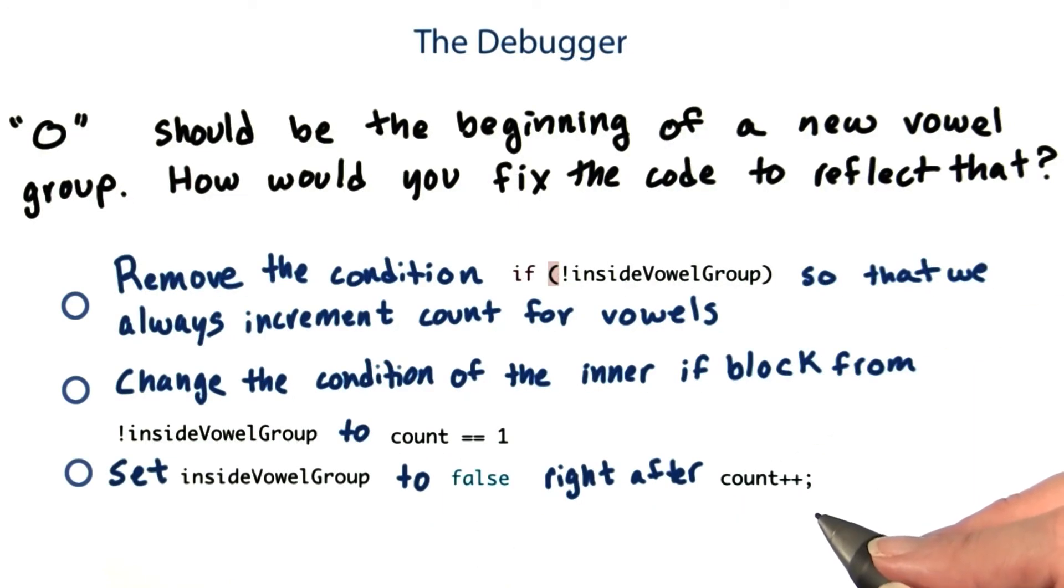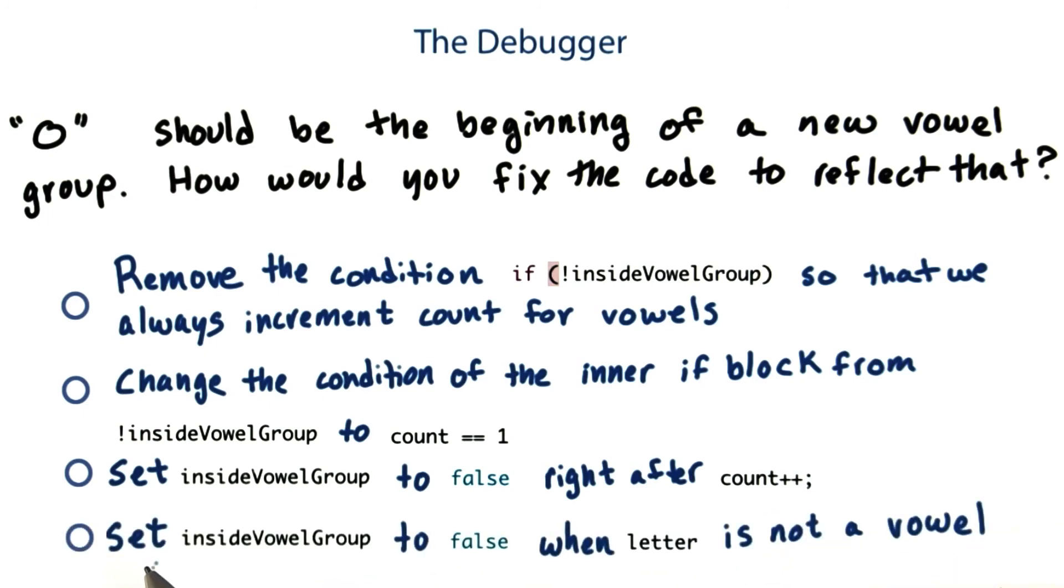We could set inside vowel group to false right after count plus plus, or set inside vowel group to false when letter is not a vowel.